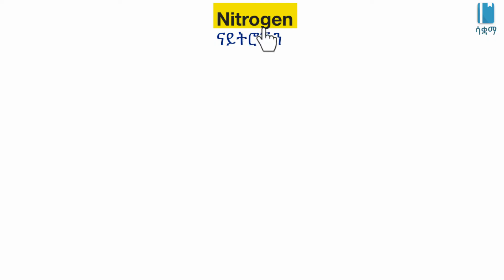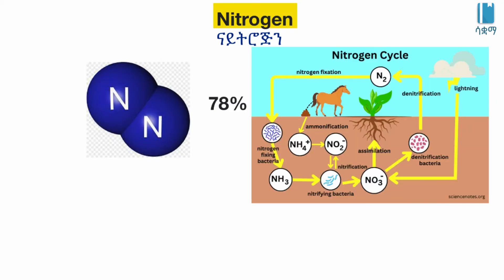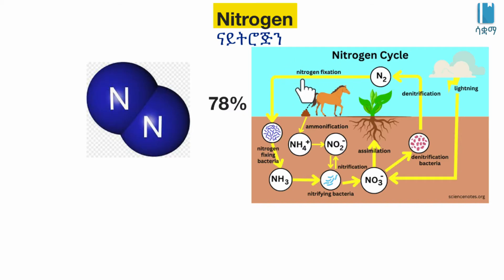Nitrogen gas is the most abundant. When it comes to energy-producing, we produce nitrogen fixation. The nitrogen cycle is the most abundant and it's very important to the process.